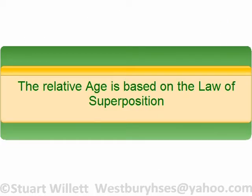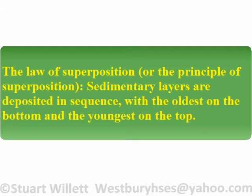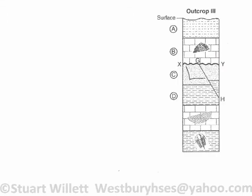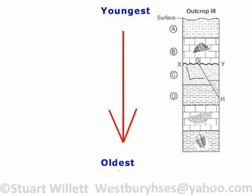The relative age is going to be based on what is known as the law of superposition, or the principle of superposition. Basically, sedimentary layers are deposited in sequence with the oldest on the bottom and the youngest on the top. So, looking at this, that would basically mean that A is younger than B, B is younger than C, C is younger than D.